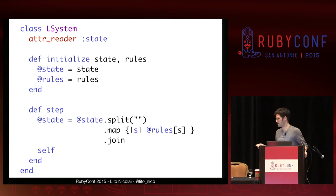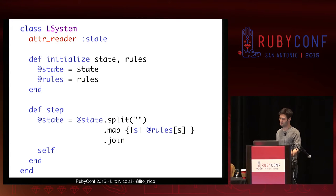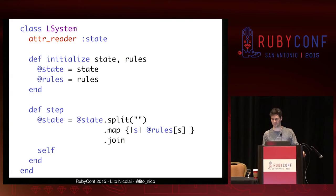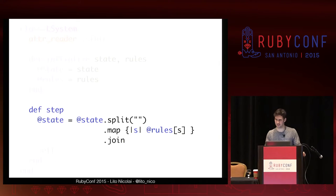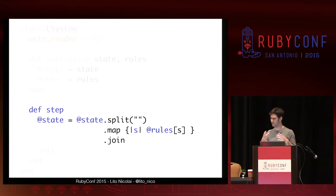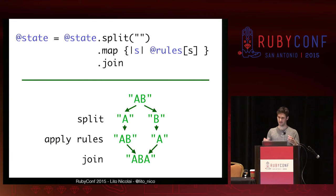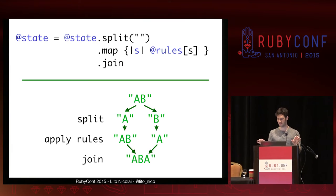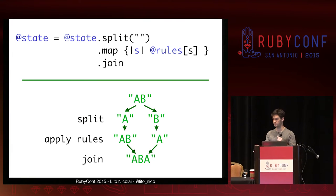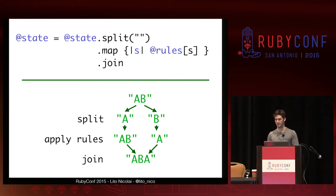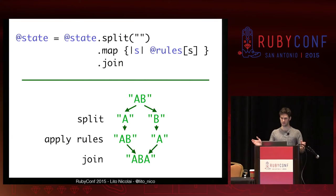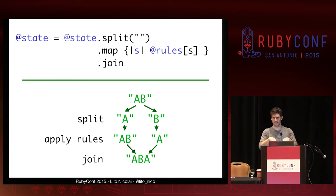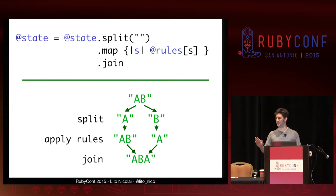Here's an implementation of an L-system in Ruby. You'll notice it's dead simple — most of it is bookkeeping, like keeping track of what state we've passed in and what the rules are. The actual logic of the L-system is a one-liner that I've split up into three lines. You have the state like an alga and a baby, you split this up into a list, you apply the rules to each — the rules being a hash that you can map across the list — and then you join them back together. That is the entire implementation of L-systems.